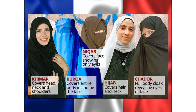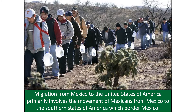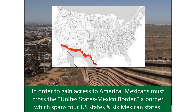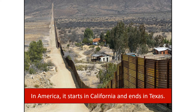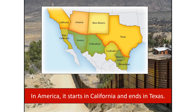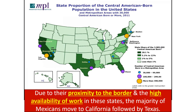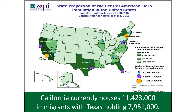Case study: the USA. Migration from Mexico to the United States primarily involves movement to the southern border states — California, Arizona, New Mexico, and Texas — crossing a border that spans four US states and six Mexican states. Due to proximity to the border and high availability of work, the majority of Mexicans move to California first, then Texas. California currently houses over 11 million immigrants, with Texas holding almost eight million.